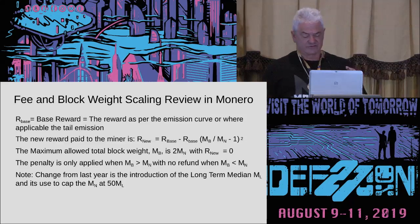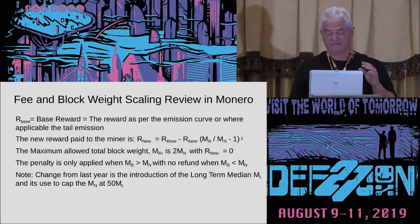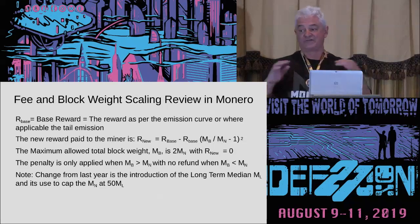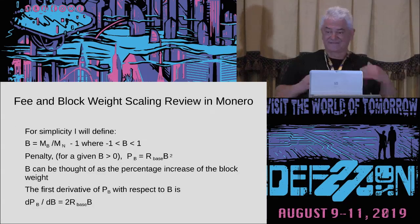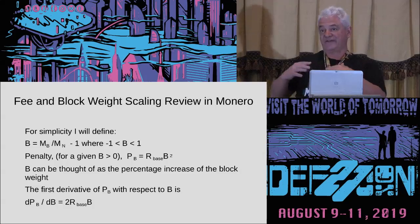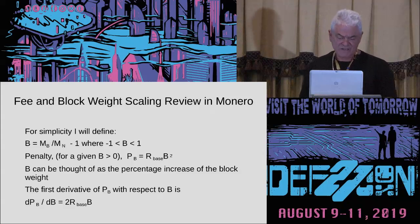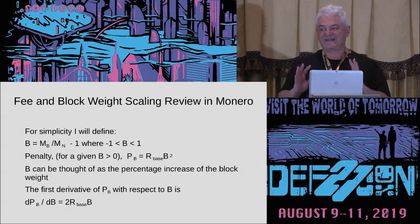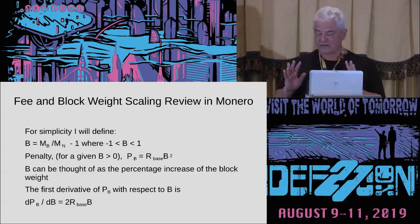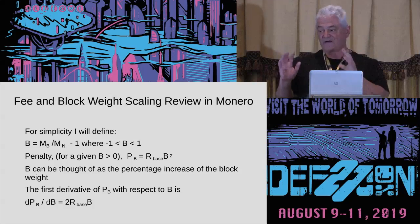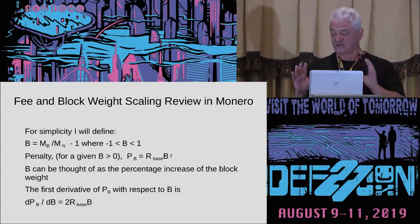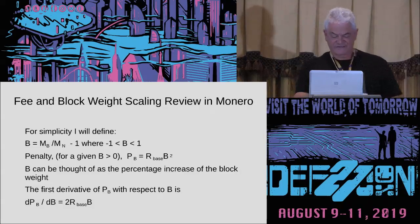The change introduced in this spring's hard fork was capping the median at 50 times the long-term median, which is over 100,000 blocks, and then it scales at a much lower rate to prevent out-of-control scaling. For simplicity, I define B as this ratio — essentially the percentage increase in the block you mine. The penalty becomes R times B squared: the square of B times R is your penalty, which you can think of as the square of the percentage increase in the block rate.